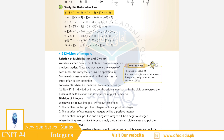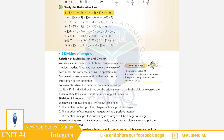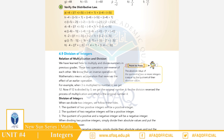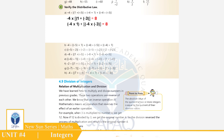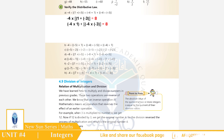Question Number 4: Verify the distributive law. Part A: (−4) × [1 + (−3)] = [(−4) × 1] + [(−4) × (−3)]. Left hand side = 8 and right hand side also = 8. So it is verified - distributive law. اسی طرح اگلے parts آپ نے خود حل کرنے ہیں۔